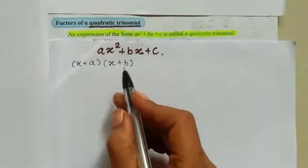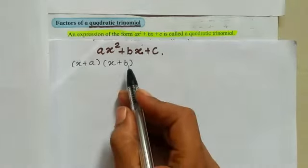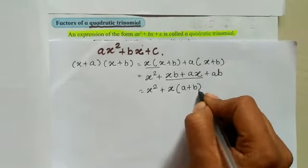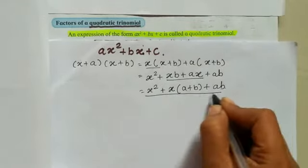If this type of term comes in front of us, how do we solve it? If x multiplies the second bracket, we get x(x + b) + a(x + b), which gives x² + bx + ax + ab. Now x² stays as is, and from the two middle terms we take x as common, giving x² + x(a + b) + ab. This shows the factors of the expression.